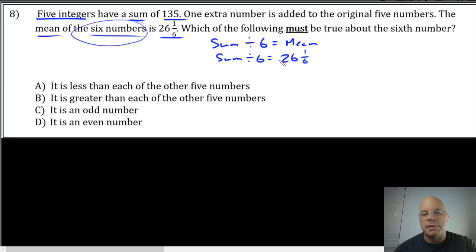If the sum divided by six is 26 and one-sixth, then the sum is equal to 26 and one-sixth multiplied by six. This is relatively easy multiplication. We distribute the six to both terms, so 26 sixes is 156, and one-sixth of six is one, giving us 157.